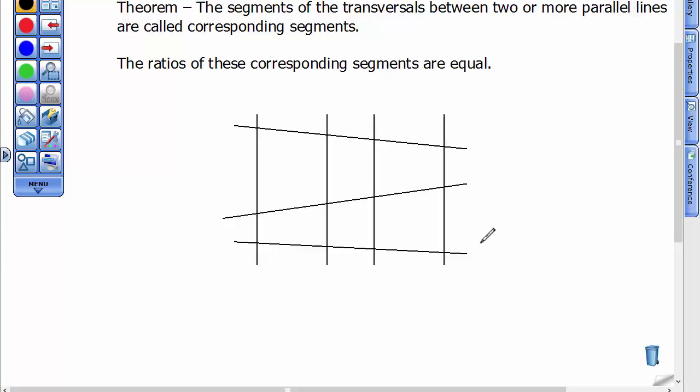These three right here are called the transversals. So let's go ahead and label them. Again, line 1, line 2, line 3, line 4. And they are all parallel to one another, so I'm going to state that as well. A little hard because these are parallel symbols and L's. But line 1 is parallel to line 2 is parallel to line 3 is parallel to line 4.